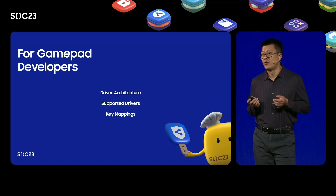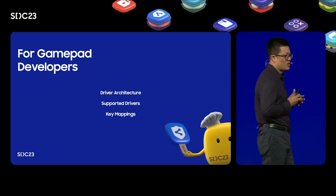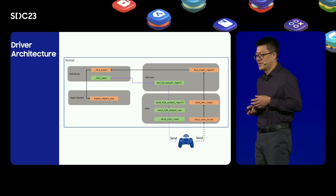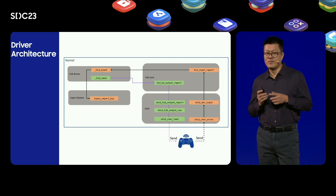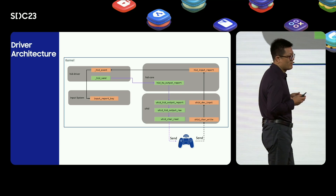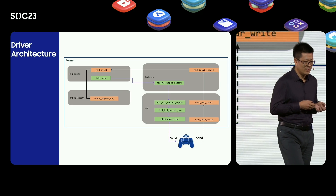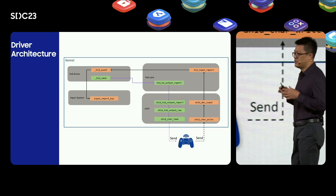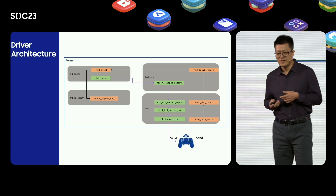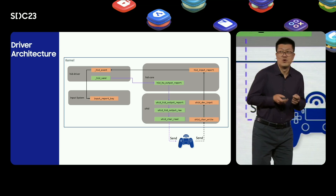The third topic is for gamepad developers. In this topic, we will introduce driver architecture, currently supported drivers, and driver key codes corresponding to each button. Most gamepads use the HID driver, so we will show how the HID driver works on Tizen TV. When a gamepad is connected, the corresponding HID driver is loaded. First, the HID driver will create a device node in the input system. When a gamepad button is pressed, UHID dispatches the key event to HID core, which then dispatches the event to the HID driver. The HID driver finally reports the event to the input system. The HID driver can also transfer data to the gamepad via HID core and UHID.